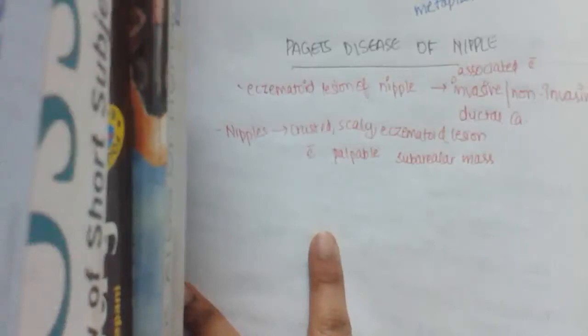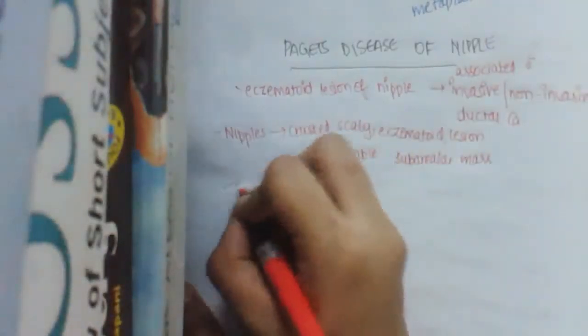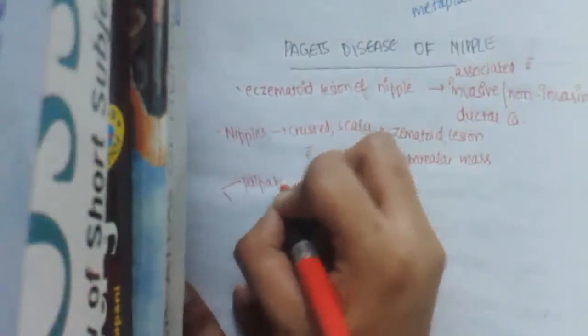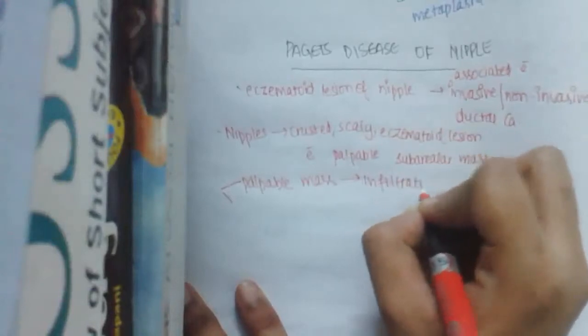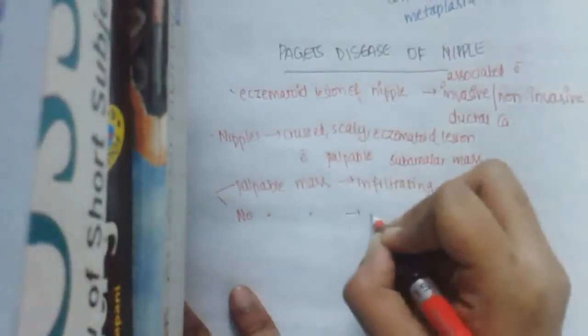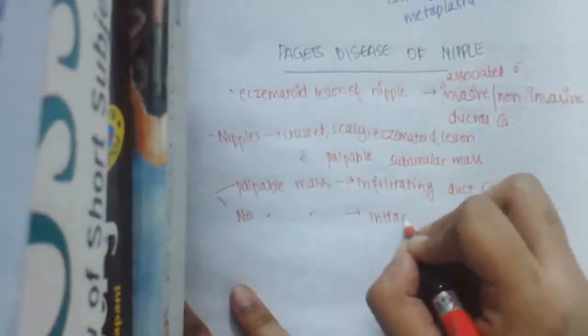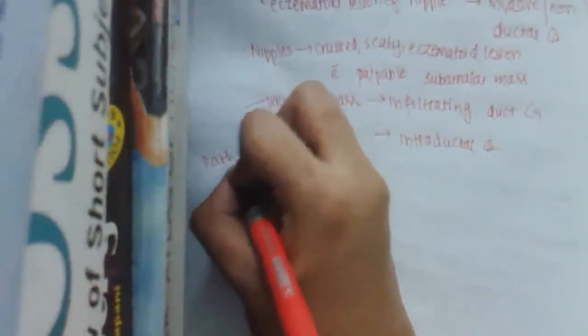It is of two types. If there is a palpable mass, it may be an infiltrating duct carcinoma. If there is no palpable mass, it may be intraductal carcinoma. The prognosis with Paget's disease is less favorable compared to normal duct carcinoma.